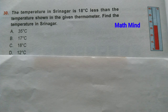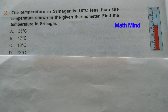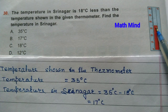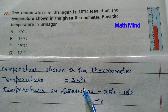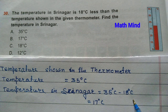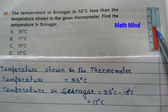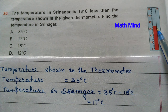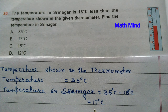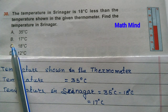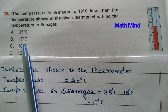Question number 30: The temperature in Singapore is 18 degrees Celsius less than the temperature shown in the thermometer. Find the temperature in Singapore. Temperature shown in the thermometer: 35 degrees Celsius. Subtracting 18 gives 17 degrees Celsius. Option B is correct: 17 degrees Celsius.